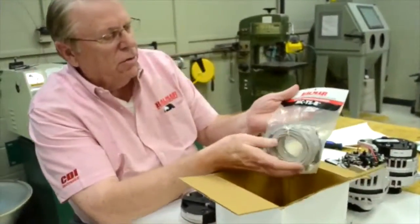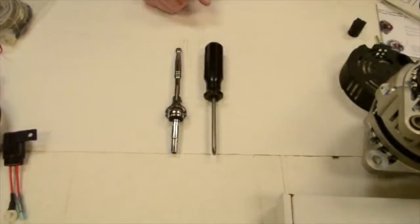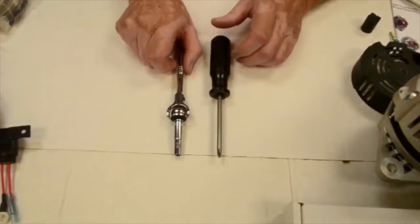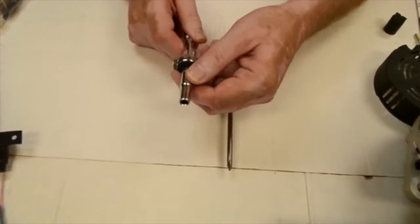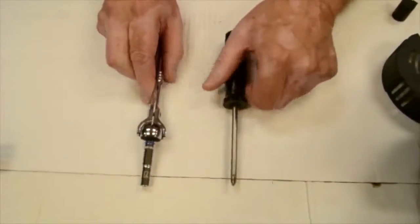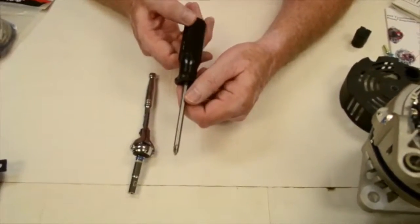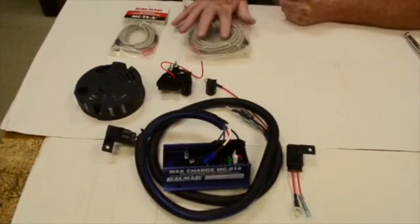It also includes the MC-TS-B battery temperature sensor. The tools you need for this installation are very simple. It is simply a 7-millimeter socket, or a nut driver if you have one, and a Phillips screwdriver for installing the alternator temperature sensor.